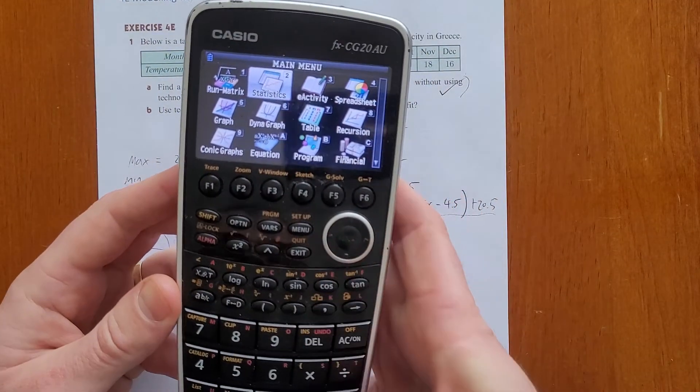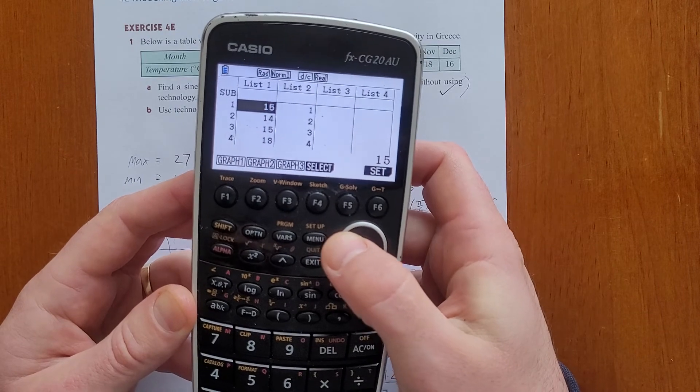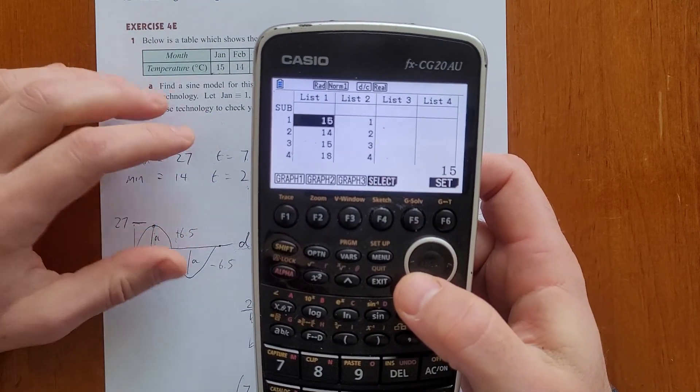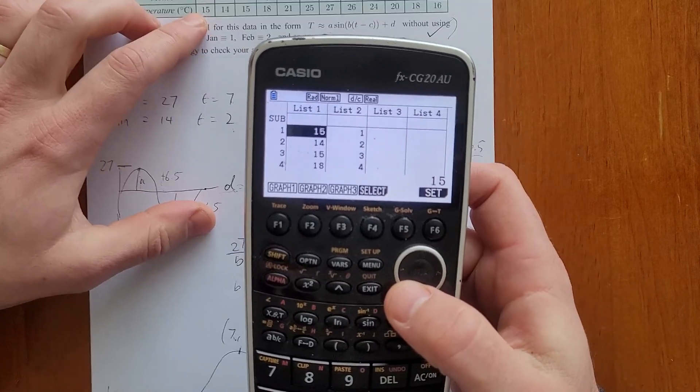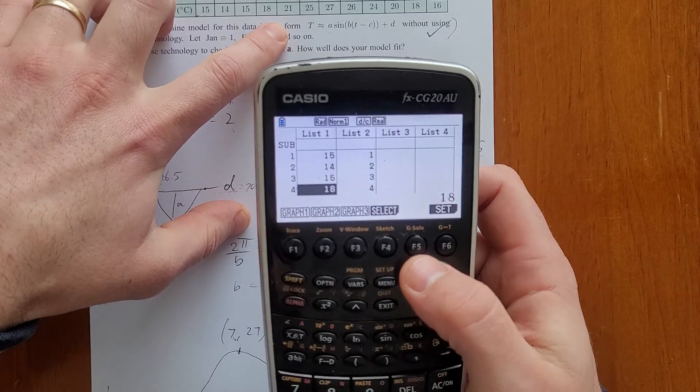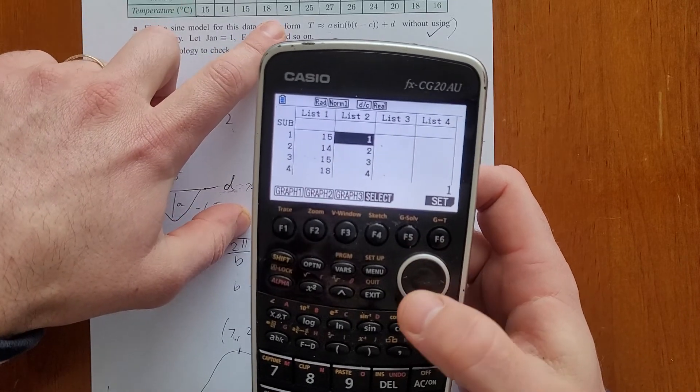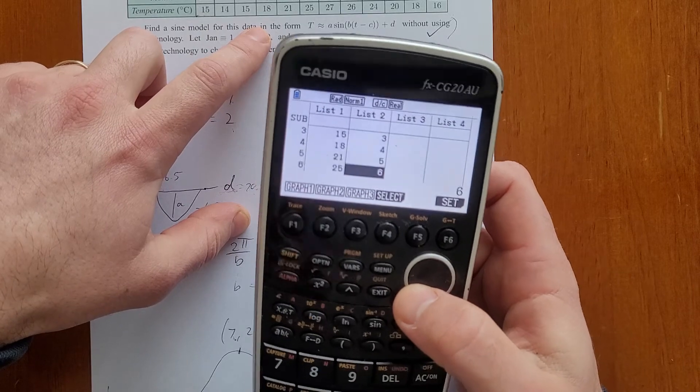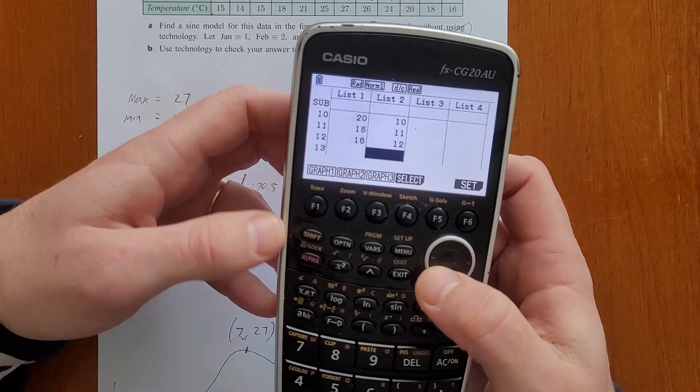Let's look at how we can use our calculator. So you're going to go into statistics menu, and I've gone ahead and done this already just to save time in the video. So on the left-hand column here, I've listed all the temperatures. So 15, 14, 15, 18, et cetera. And then here's the months, where 1 is January, 2 is February, 3 is March, et cetera, all the way down.